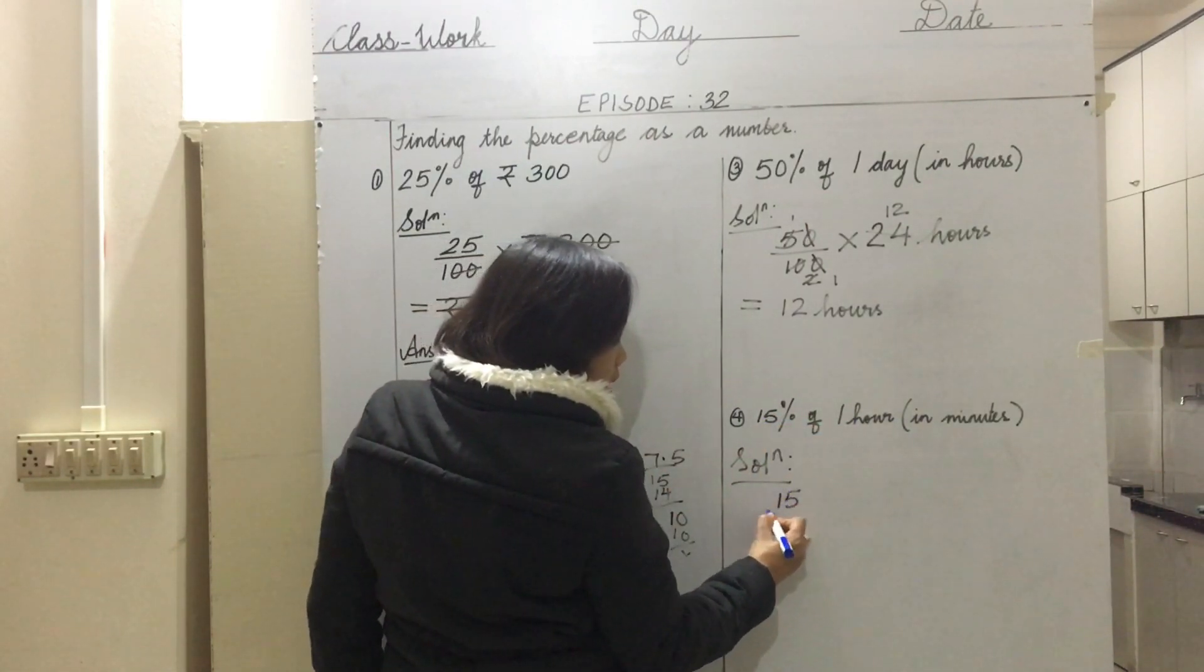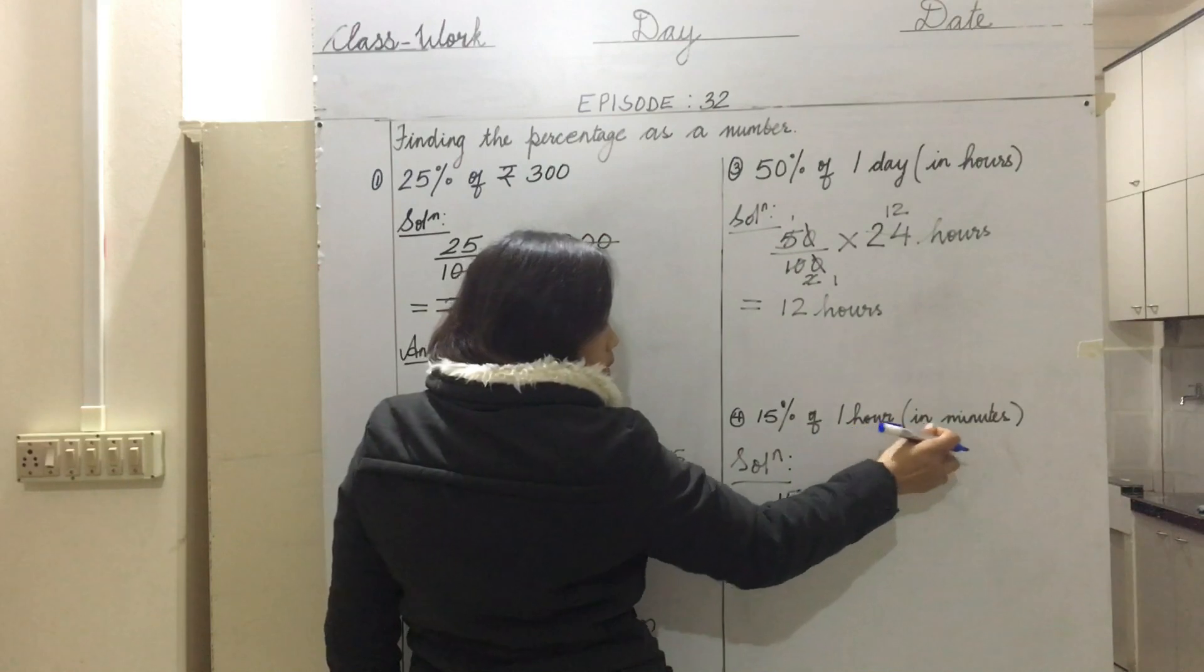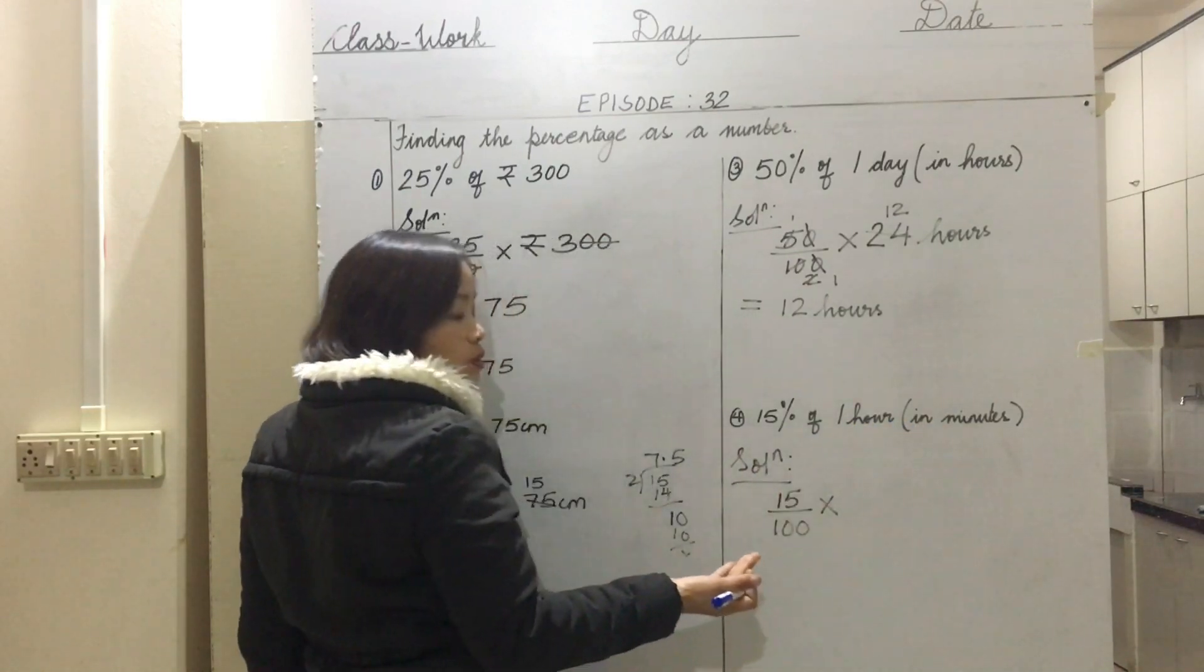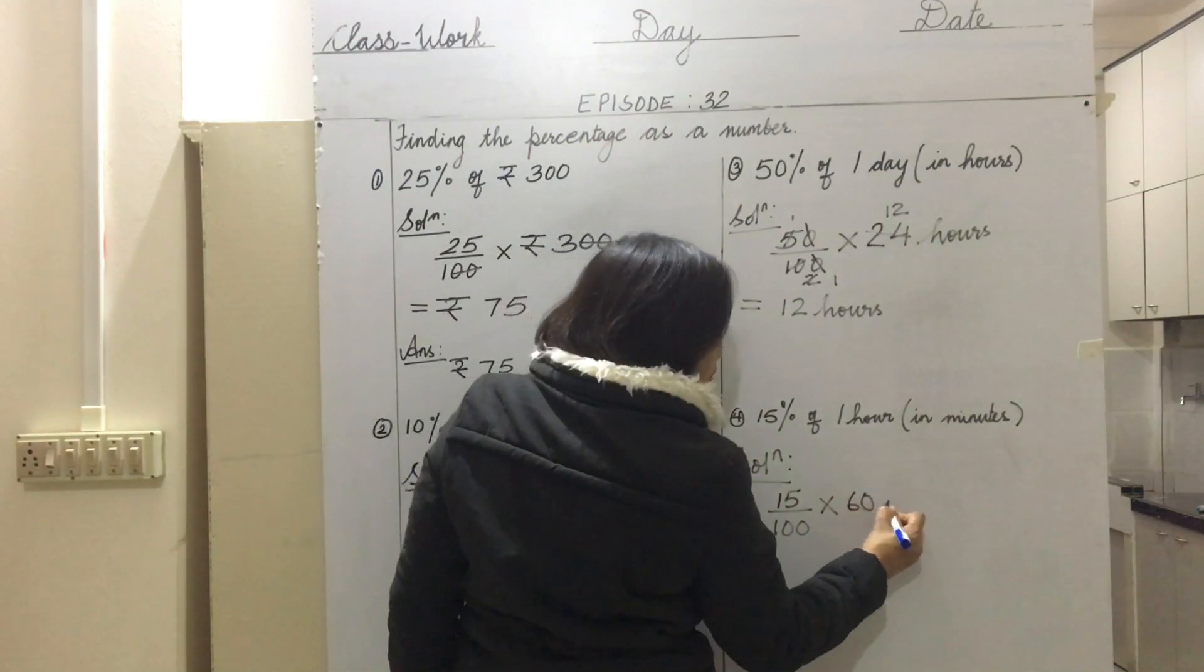One hour in minutes: how many minutes do we have in one hour? 60 minutes. So we write 60 minutes.